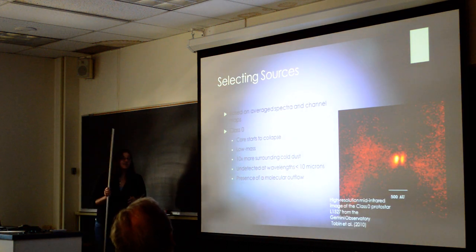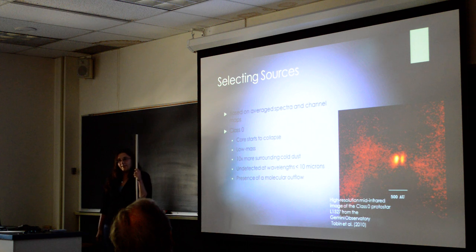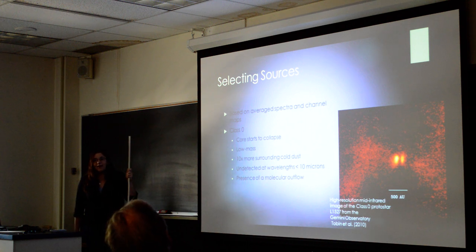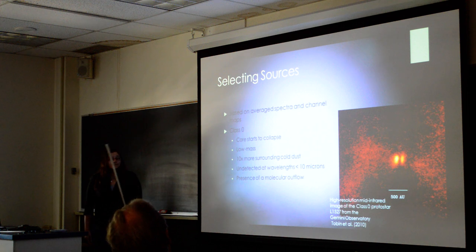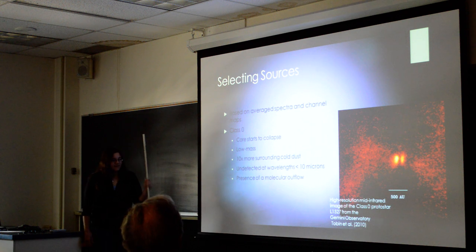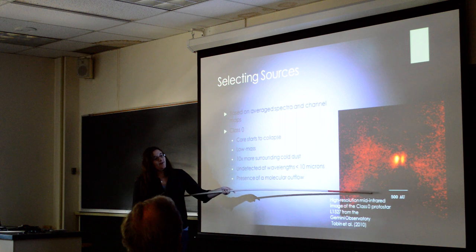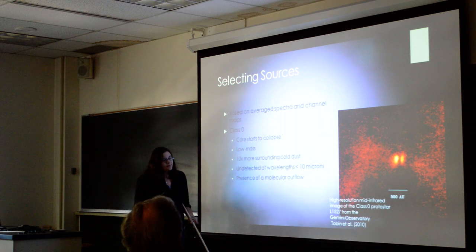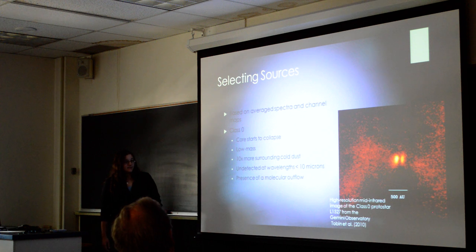Selecting our sources was the most important part, really. It was based on the average spectra that we got from them and also the channel maps that we made based on these spectra. It turns out, I'm not sure why, but all of our sources ended up being class zero sources, or class zero protostars. An example of which is shown over here, and while this isn't actually in the Orion Nebula, it looks about the same. This one's actually in the Taurus region of the sky.